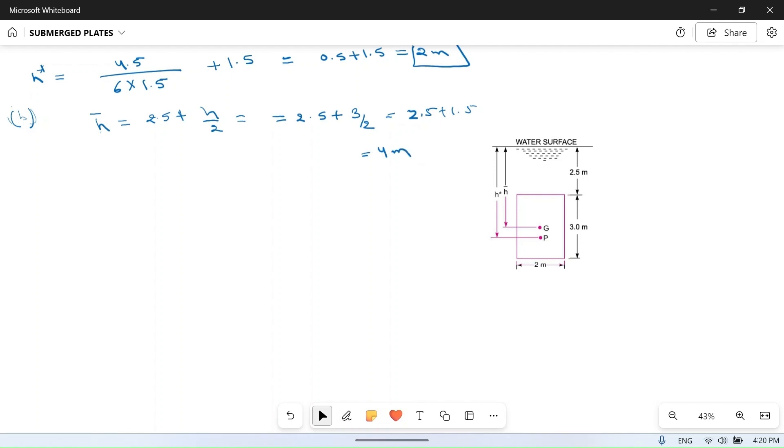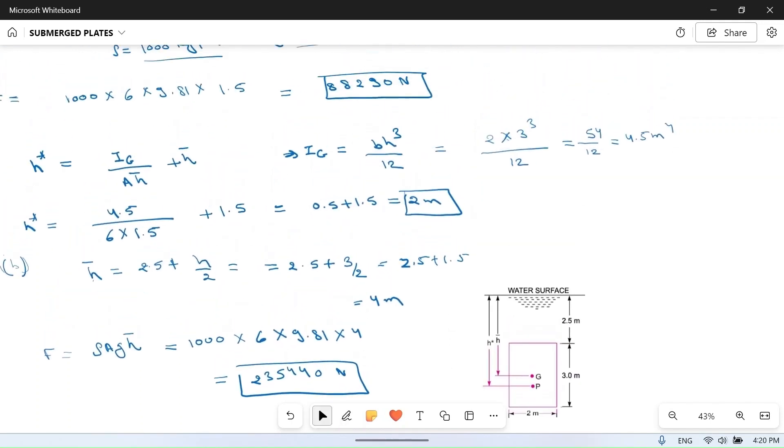So total pressure F is ρ·A·g·h̄, which will be equal to 1000 kg per meter cube into area 6 meter square into g 9.81 meter per second square into h̄ 4 meters. If you multiply everything then you will get 235,440 Newton. So from here you can compare that force increases as you go down in the water.